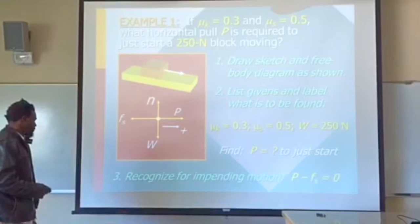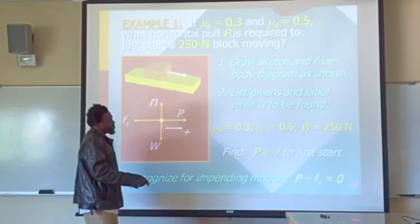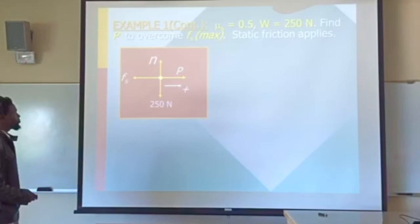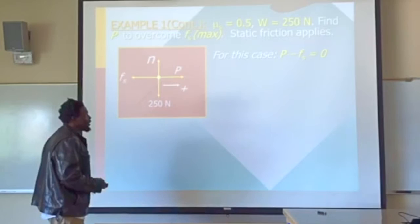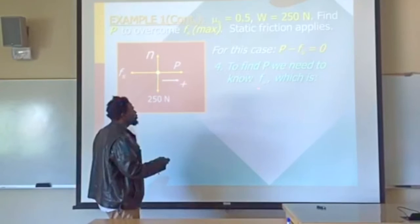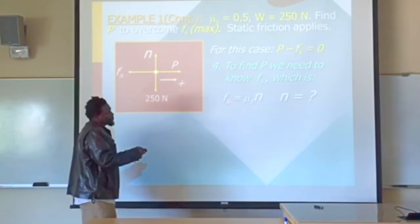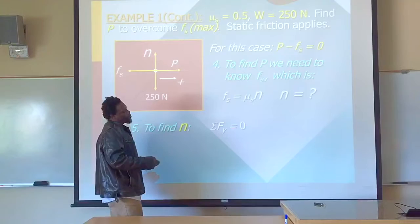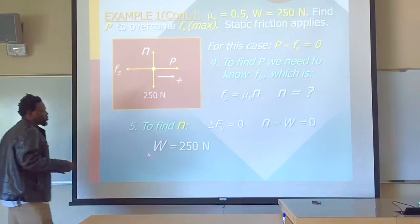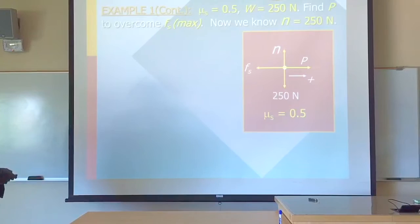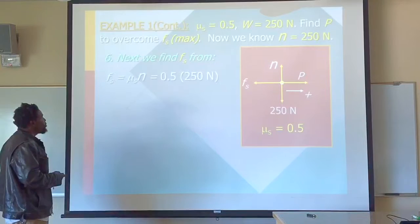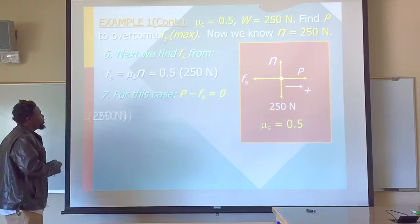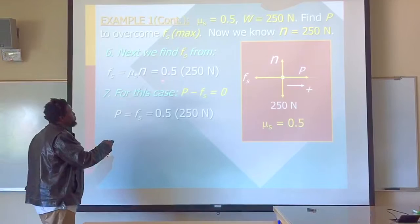To recognize impending motion, P minus Fs equals zero because the block is not moving. So to find P, we need to know Fs, which is given by Mu-S times the normal force. We can get the normal force by considering the sum of forces in the vertical direction. The sum of forces in the y direction equals zero because the block is not moving up and down, so the normal force equals W, which is 250 Newtons. We can now find Fs using this equation, and since P equals Fs and Fs equals 125, then P equals 125 Newtons.